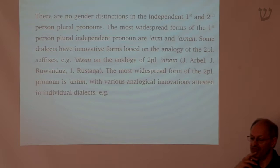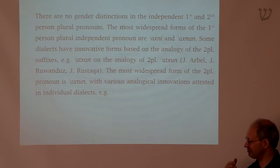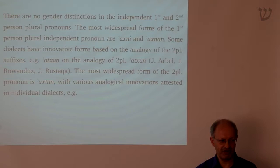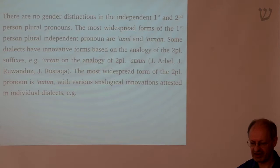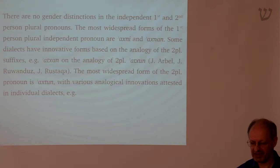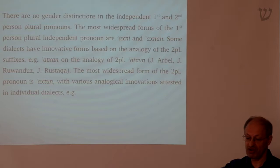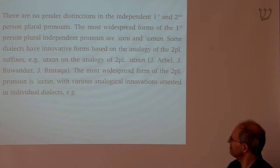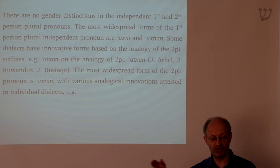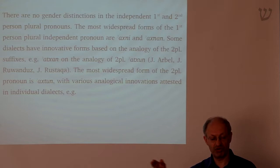There's a lot of diversity, and I don't want to confuse you by throwing too much data at you, but I just want to show you the basic principles of how independent pronouns can change their shape. Pronouns in particular are very liable to change. The two kinds of factors driving change are: within the paradigm of pronouns — like 'atchan' being based on 'atchun' — or by analogy with verbal inflection, or analogy with pronominal suffixes. For example, 'chun' looks very much like the pronominal suffix 'chun' meaning 'your', as in 'your house'.